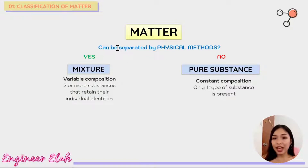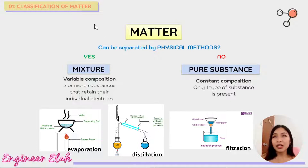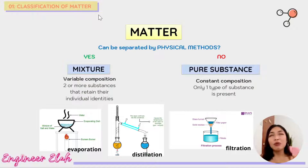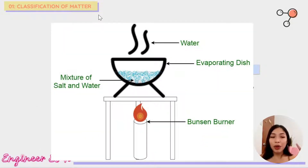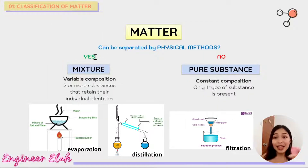The first question you will ask yourself is: can it be separated by physical methods? For example, given a salt and water solution, you can use the evaporation method to separate them — the water evaporates and the salt remains. So if the answer is yes, then it's a mixture.